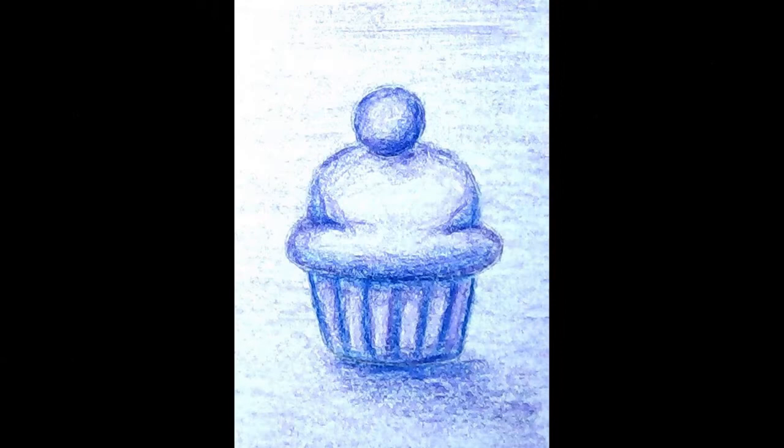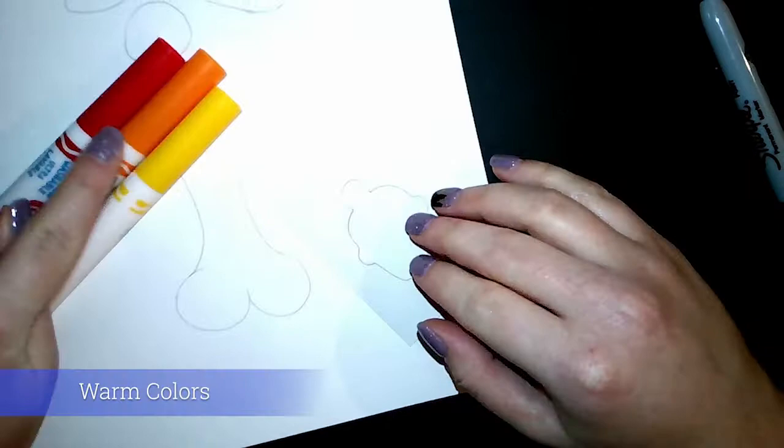Here is example number three completed. And one final example number four. This time I'm going to be showing you warm colors. That is red, orange and yellow.